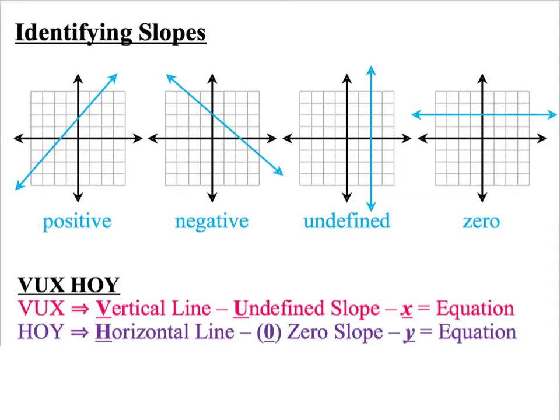The HOI stands for horizontal line, zero slope. The O is the zero and then Y is for Y equals equation. So if you remember VUX HOI, it will make determining undefined slope and zero slope easier.